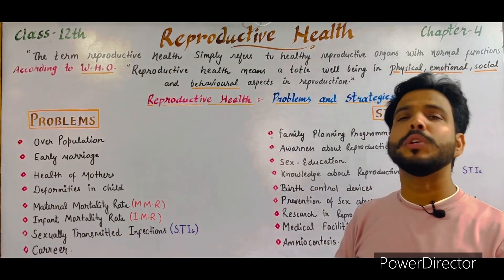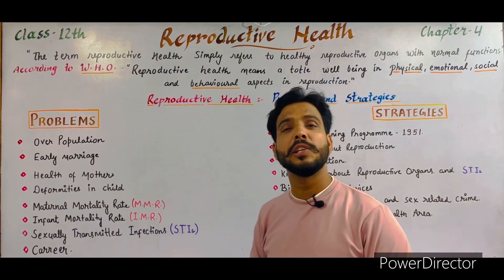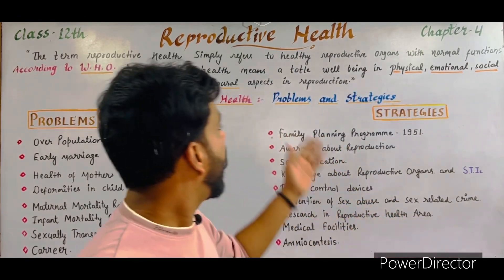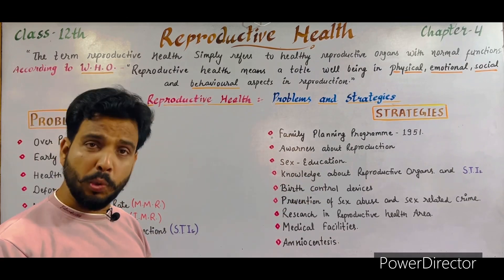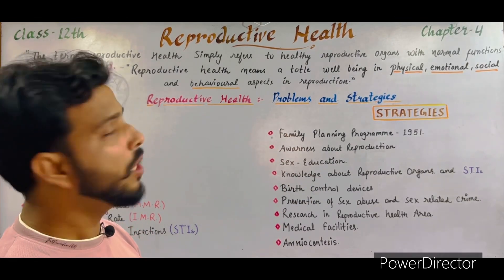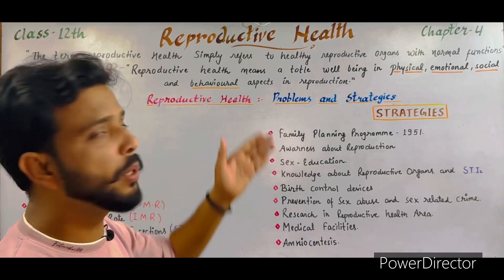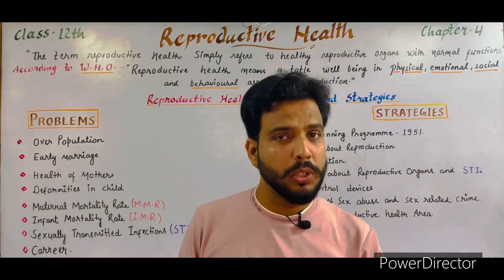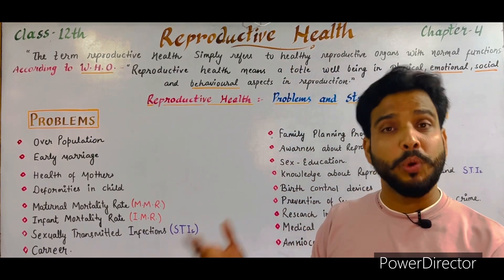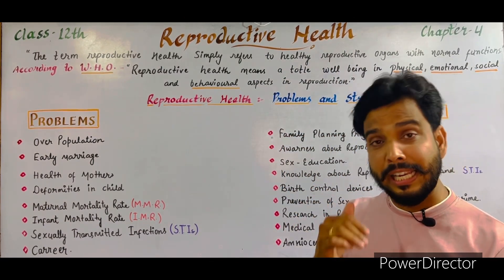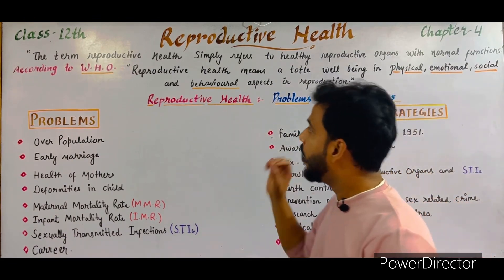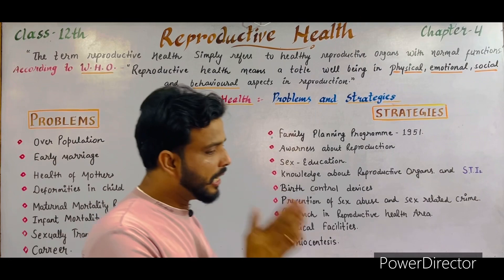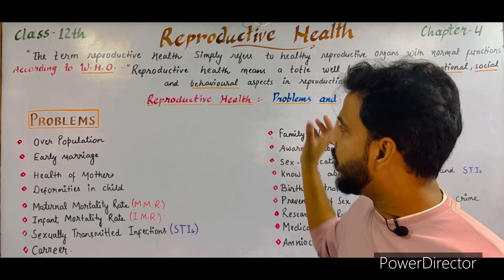According to the WHO — World Health Organization — a standard definition is given: reproductive health means total well-being in physical, emotional, social, and behavioral aspects in reproduction. It covers all these criteria — our physical development, our emotional, social, and behavioral aspects related to our reproductive system are all included in this WHO definition.